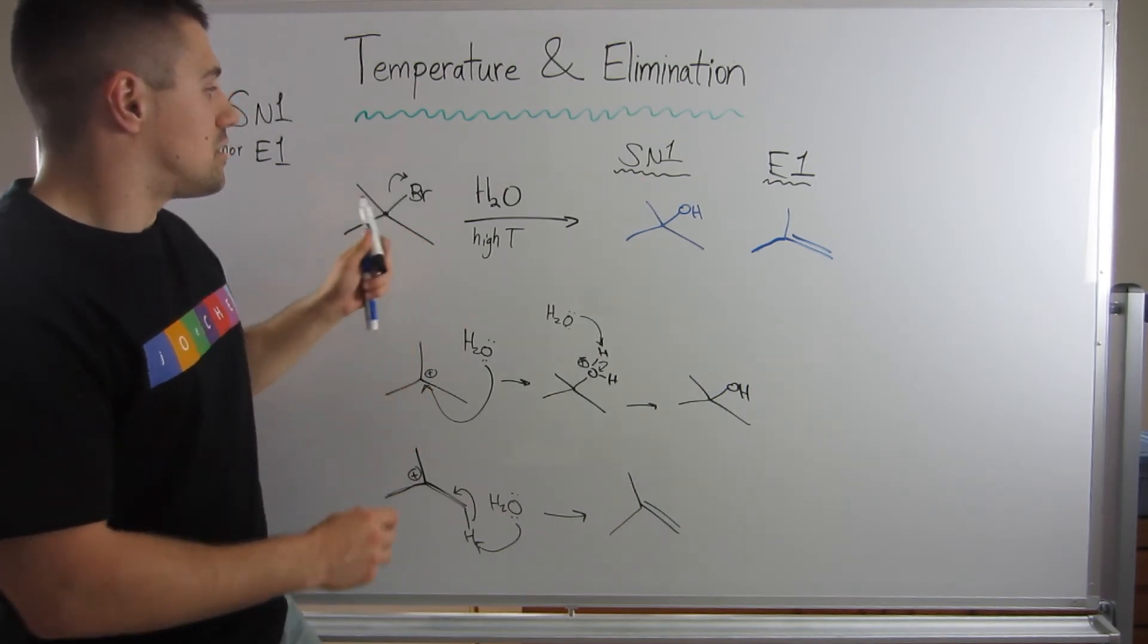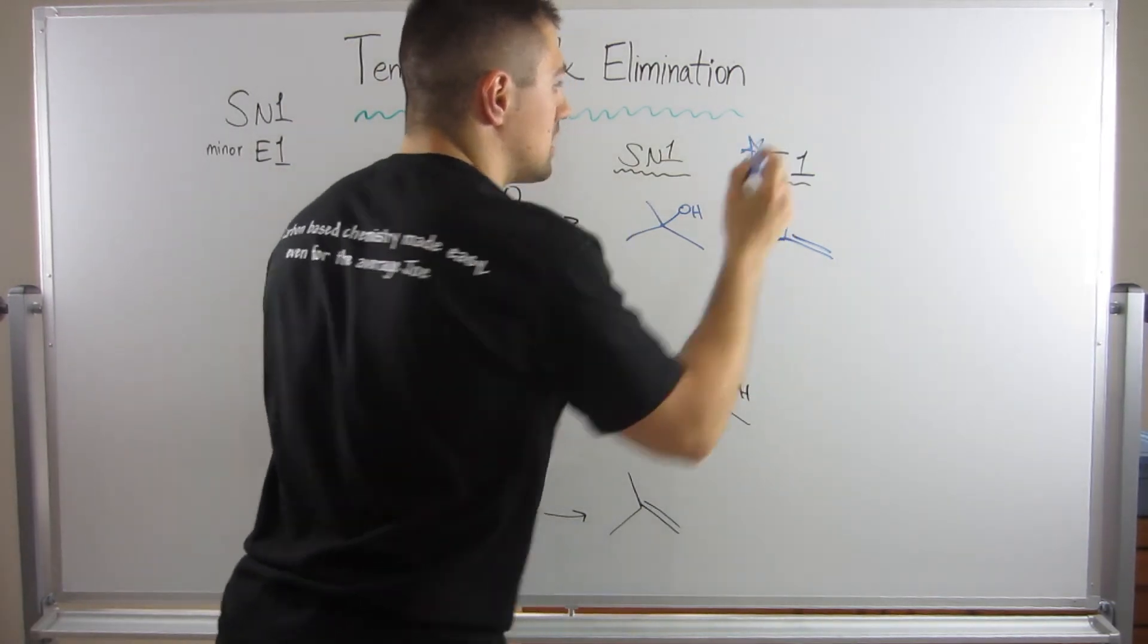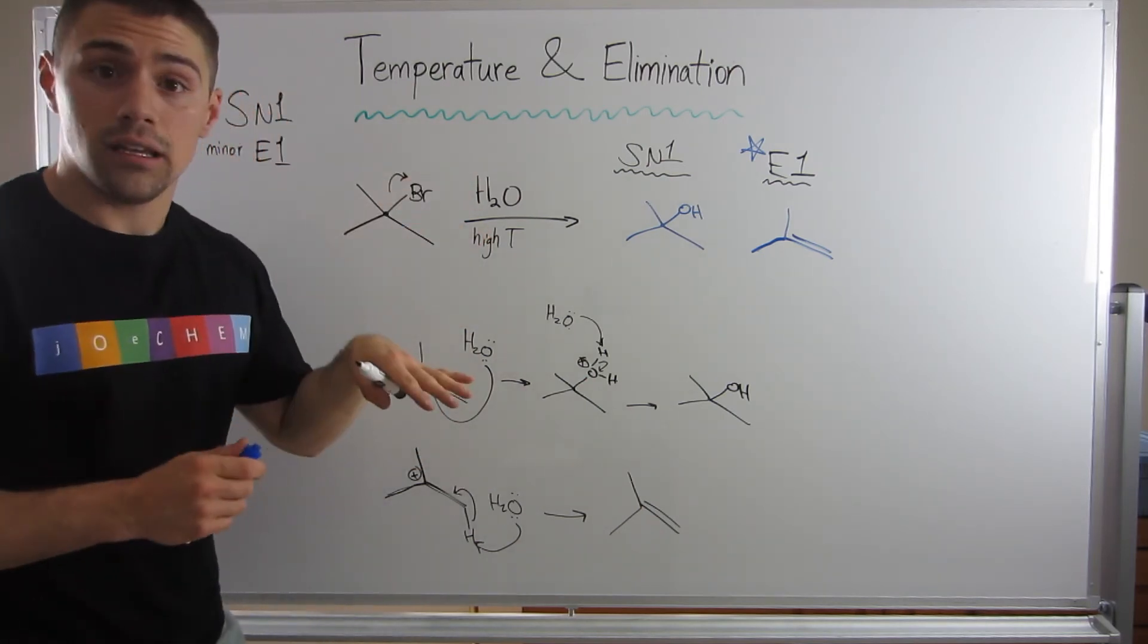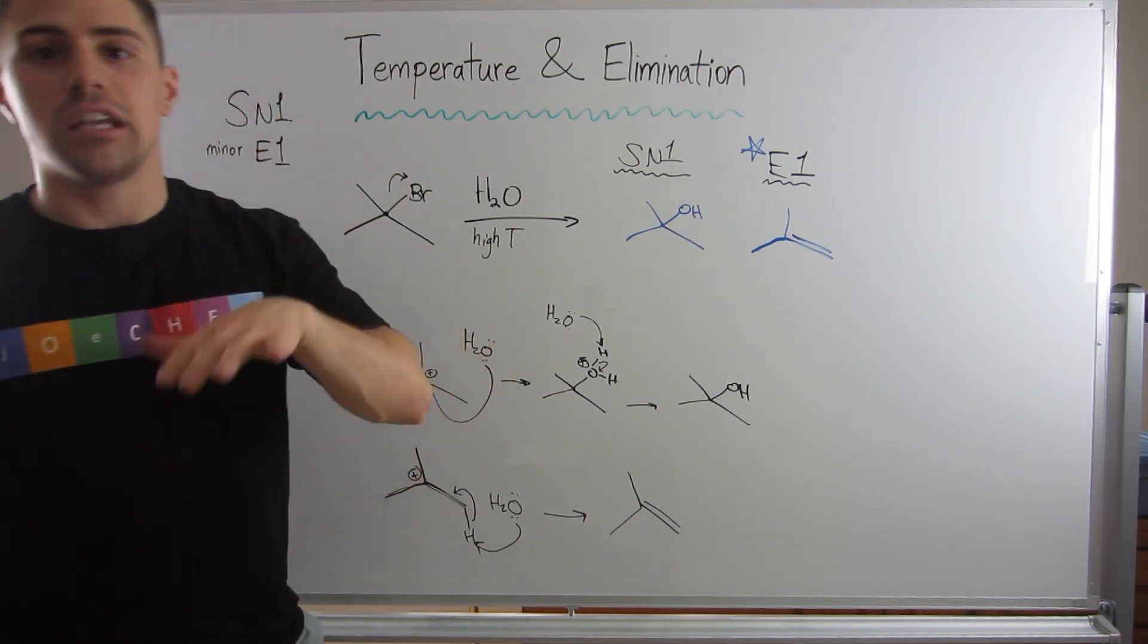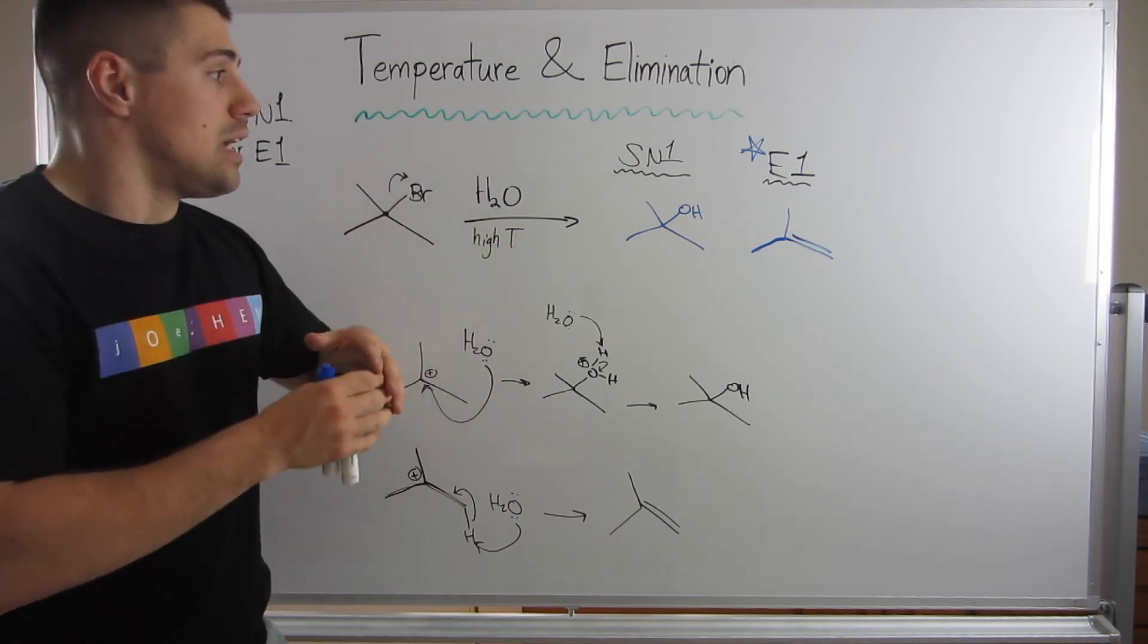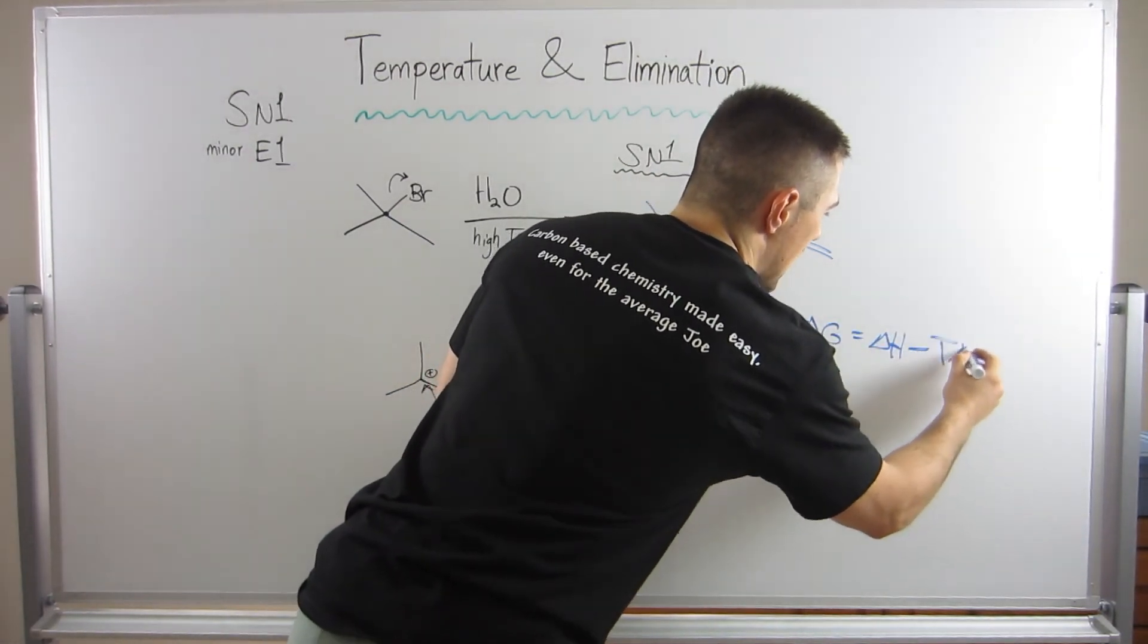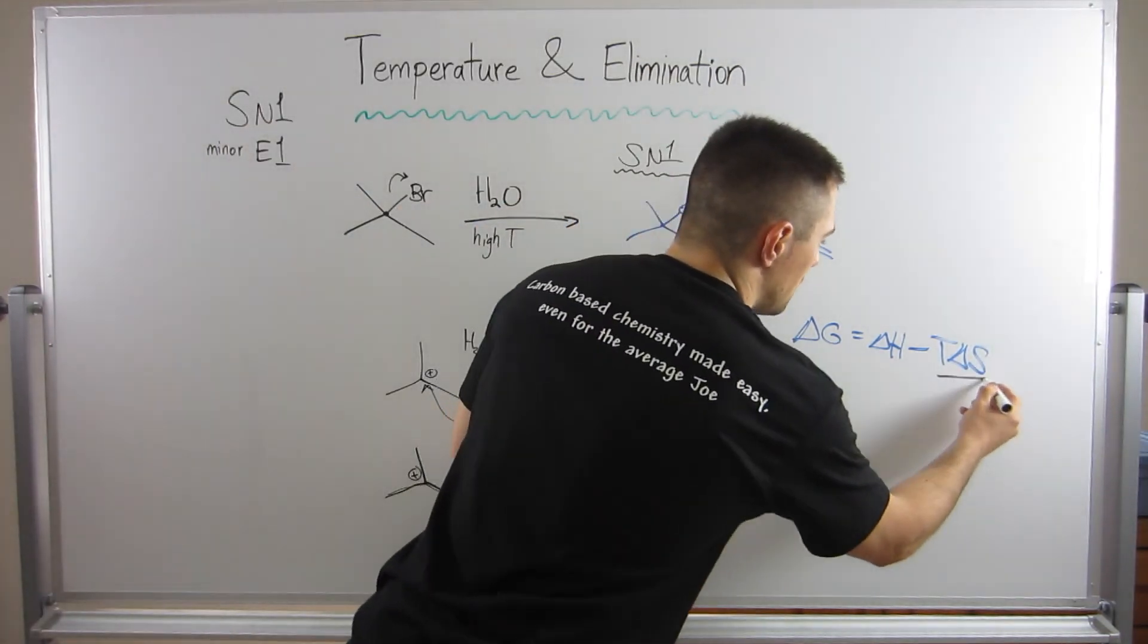What you'll sometimes see is, if this was what you were given, I would probably list the E1 product maybe with a minor SN1. Or if you were just given water, or you're given water and low T, I would go with SN1. So that's kind of how the temperature and elimination work together. We know elimination reactions have good entropic effects. Based on the Gibbs free energy equation, Delta G equals Delta H minus T Delta S.